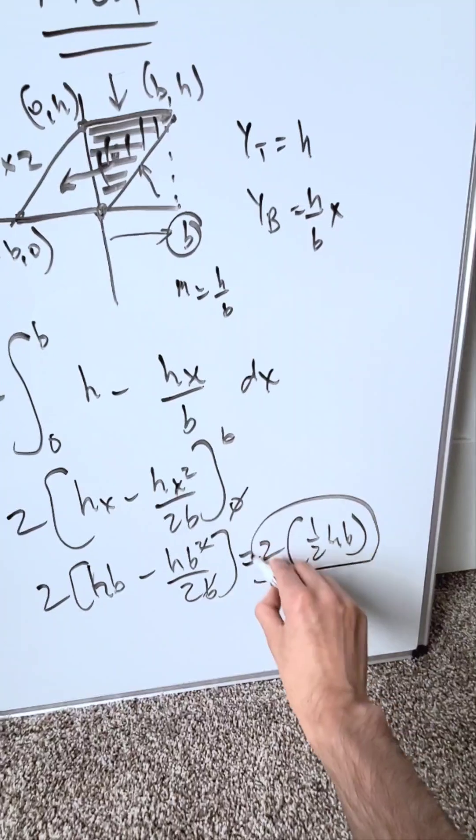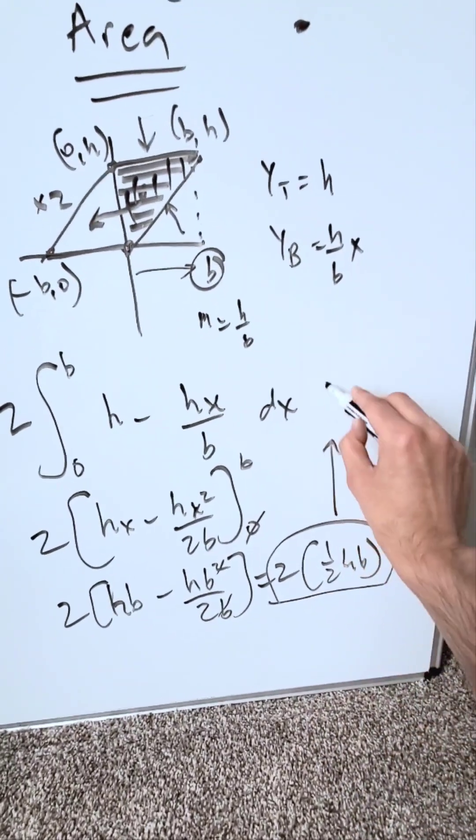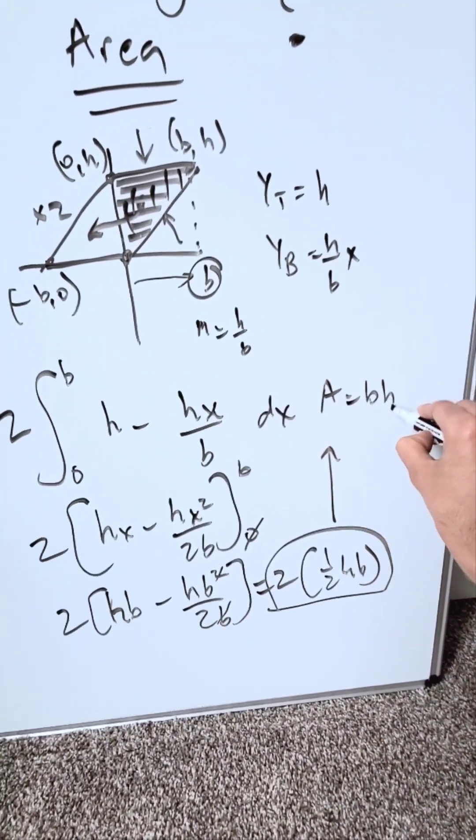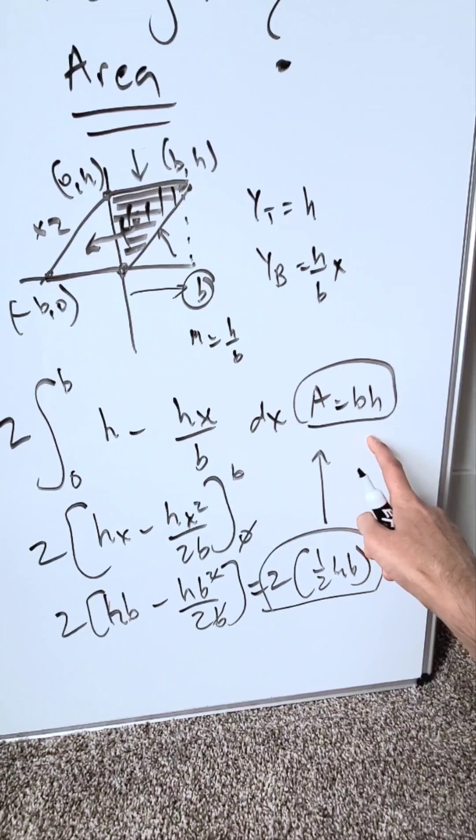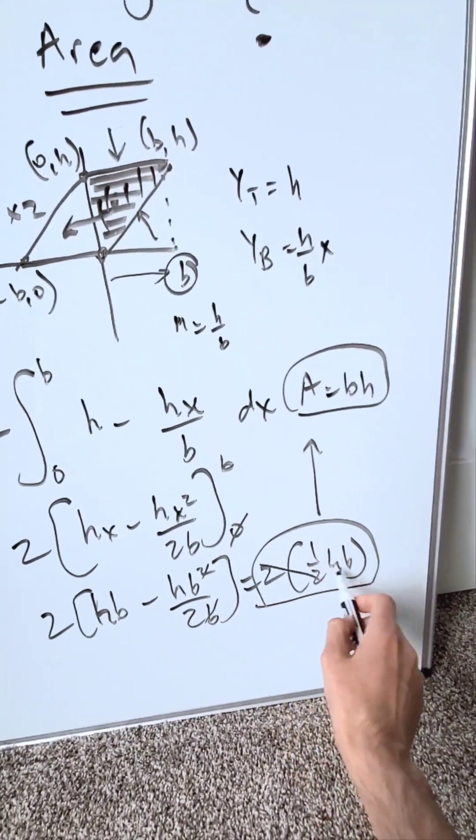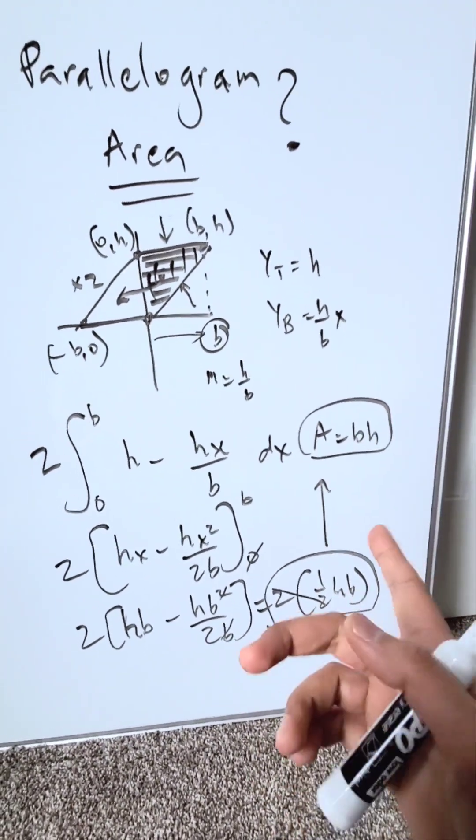When you simplify this, you'll get your area. Area is equal to base times height. I'm writing the b first and the h second, but this simplifies to hb or bh. The formula is derived.